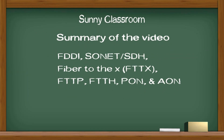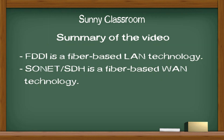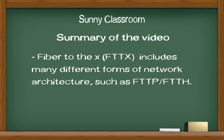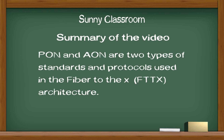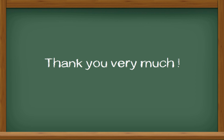Here is a summary of today's lesson. We talked about seven fiber-based networks. FDDI is fiber-based LAN topology. SONET, or SDH, is fiber-based WAN technology. FTTx includes many different forms of network architecture, such as FTTP and FTTH — these are last mile solutions for broadband service distribution to end users. PON and AON are two types of standards and protocols used within a FTTx architecture. I hope this video is useful. Thank you very much. See you next time.